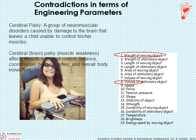Here's an example illustrated by way of cerebral palsy. It's a group of neuromuscular disorders caused by damage to the brain, often during childbirth, that leaves a child unable to control his or her muscles. The etymology is cerebral for brain, palsy for muscle weakness. It affects muscle tone, control, balance, coordination, posture, reflex, and overall body movement, making simple tasks like raising your hands, feeding yourself, or dressing yourself a major challenge.